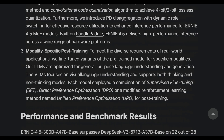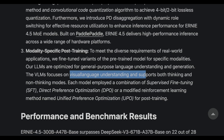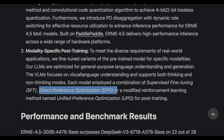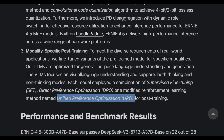Baidu says their LLMs are optimized for general-purpose language understanding and generation. The VLMs — vision language models — focus on visual language understanding and support thinking and non-thinking modes, something Google has been doing for a while. Each model uses a combination of SFT (supervised fine-tuning), DPO (direct preference optimization), or a modified reinforcement learning method called UPO — unified preference optimization. If you remember, GRPO became very popular with DeepSeek; here they use UPO for post-training.